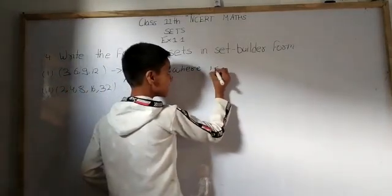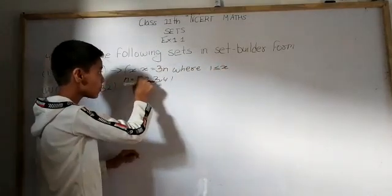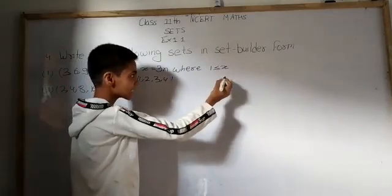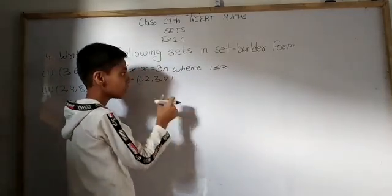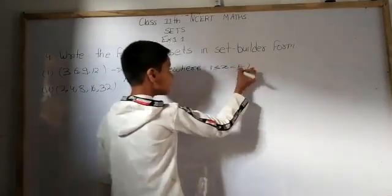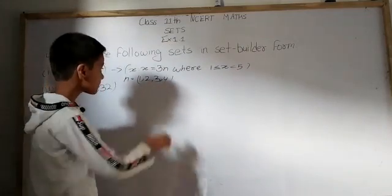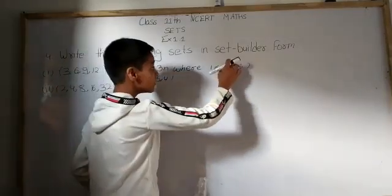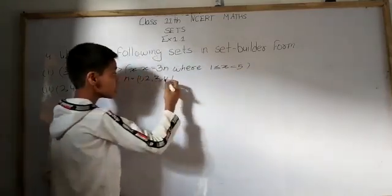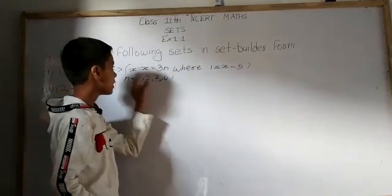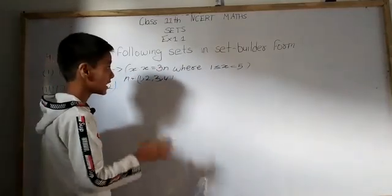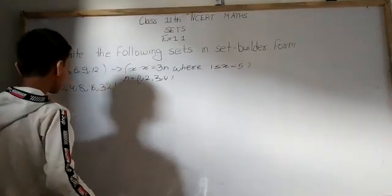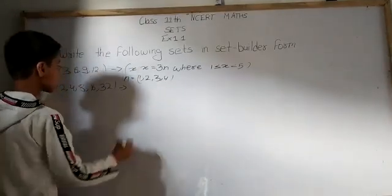Now we need to write the constraint on n. The smallest value of n in this set is 1, so we write 1 ≤ n. The largest value is 4, and the next number after 4 is 5, which is not part of the set. So we write n < 5. Our set in set builder form is: { x : x = 3n, where 1 ≤ n < 5, n is a positive integer }.